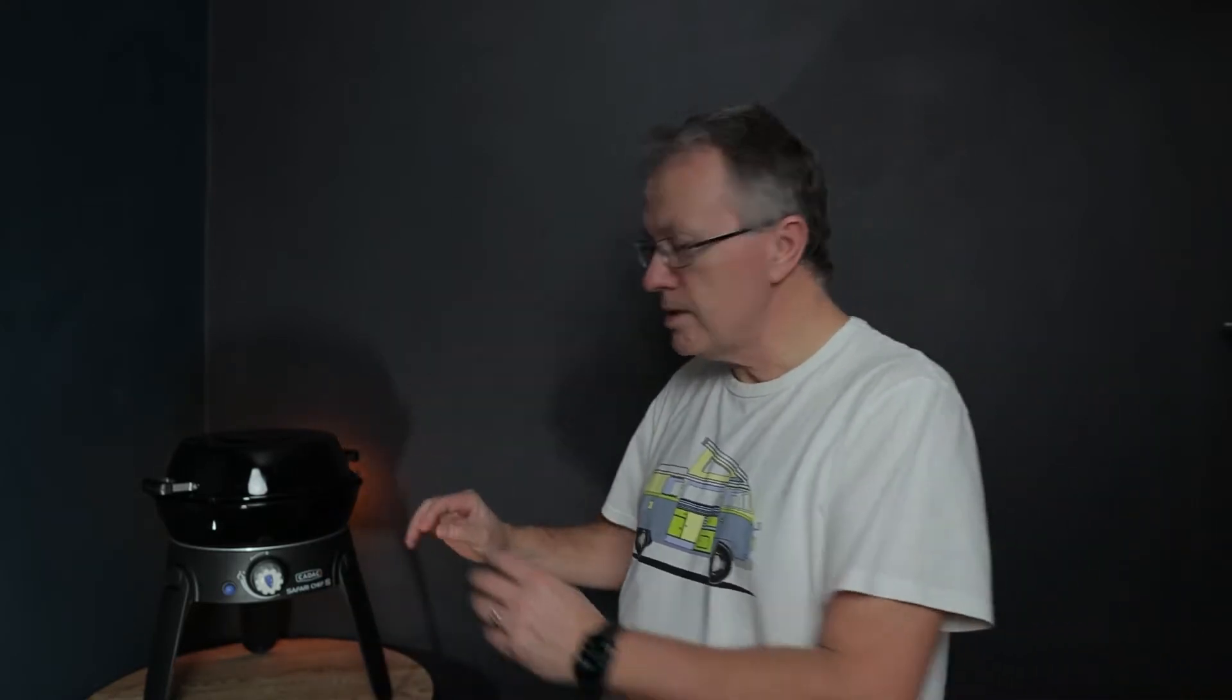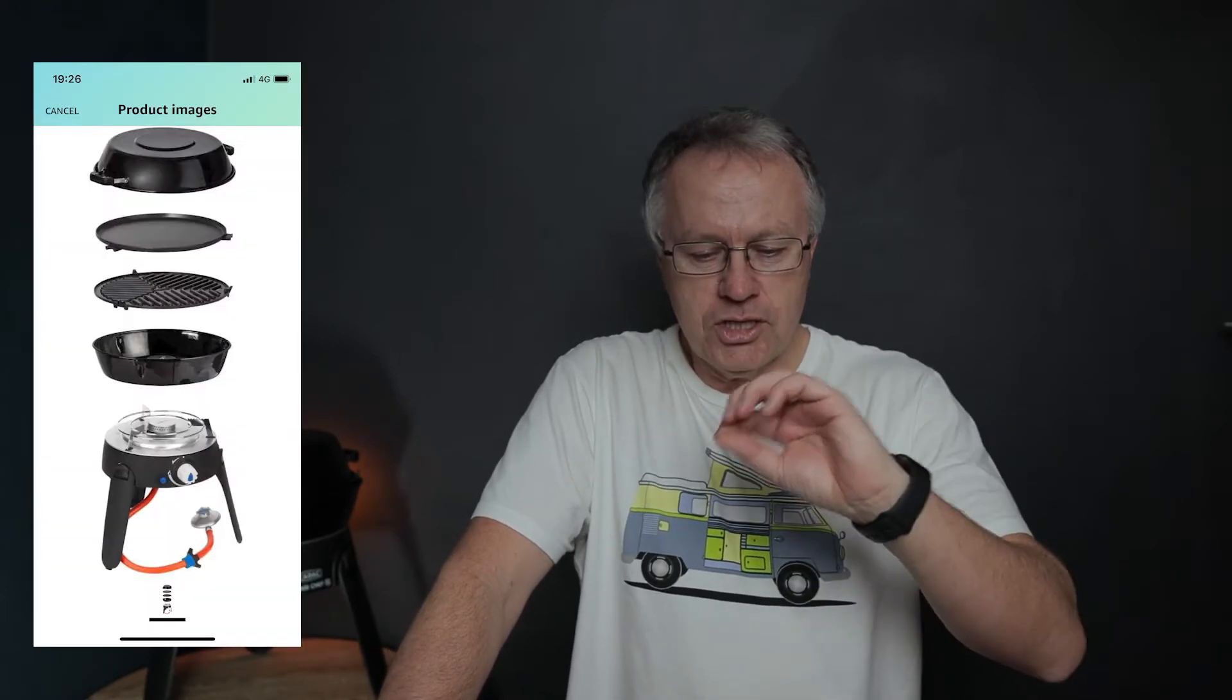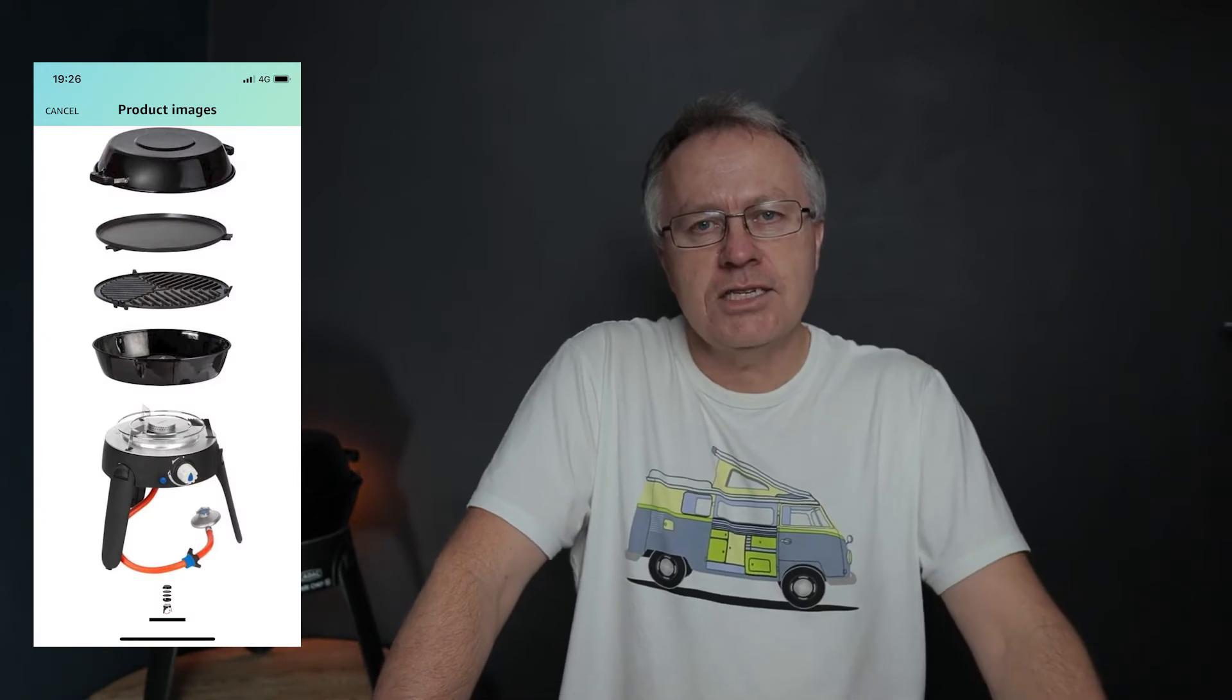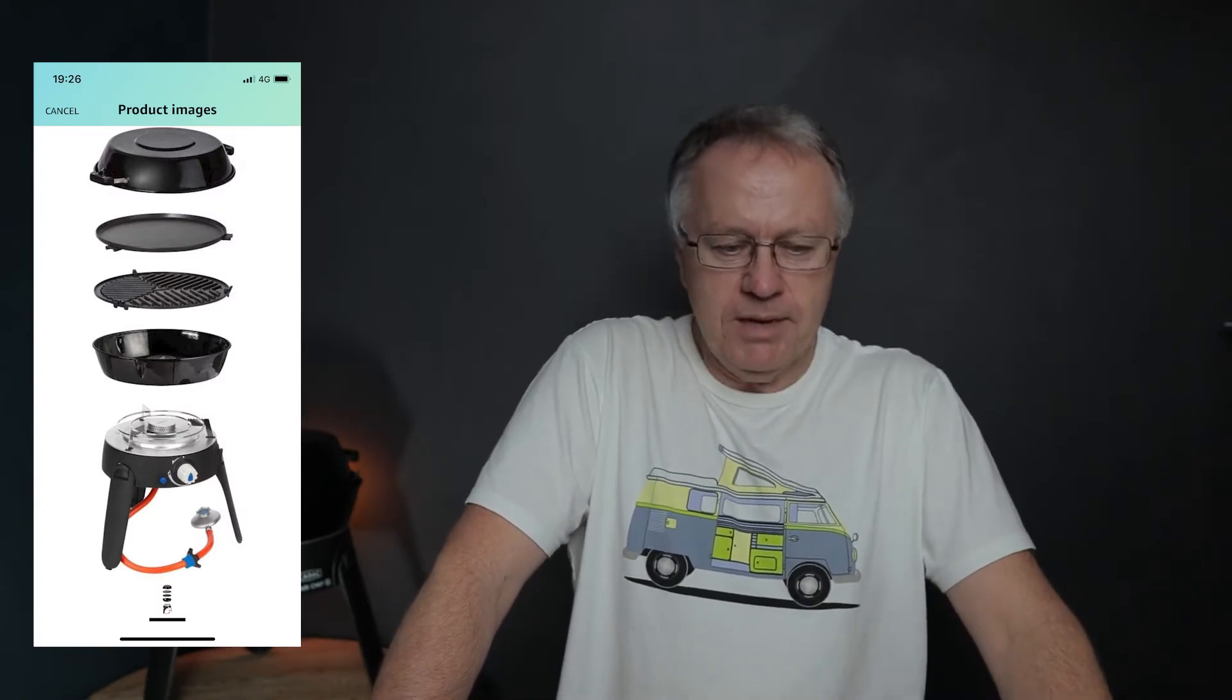So how are you doing? I'm back in the room and the Cadet Safari Chef 2 is now assembled in some form or another. Now there's a little bit of a problem. When I unboxed the barbecue, the image of the product on Amazon showed there'd been a tube and a gas regulator attached to it. I was a little bit upset about that because there wasn't and it wasn't my birthday present after all.